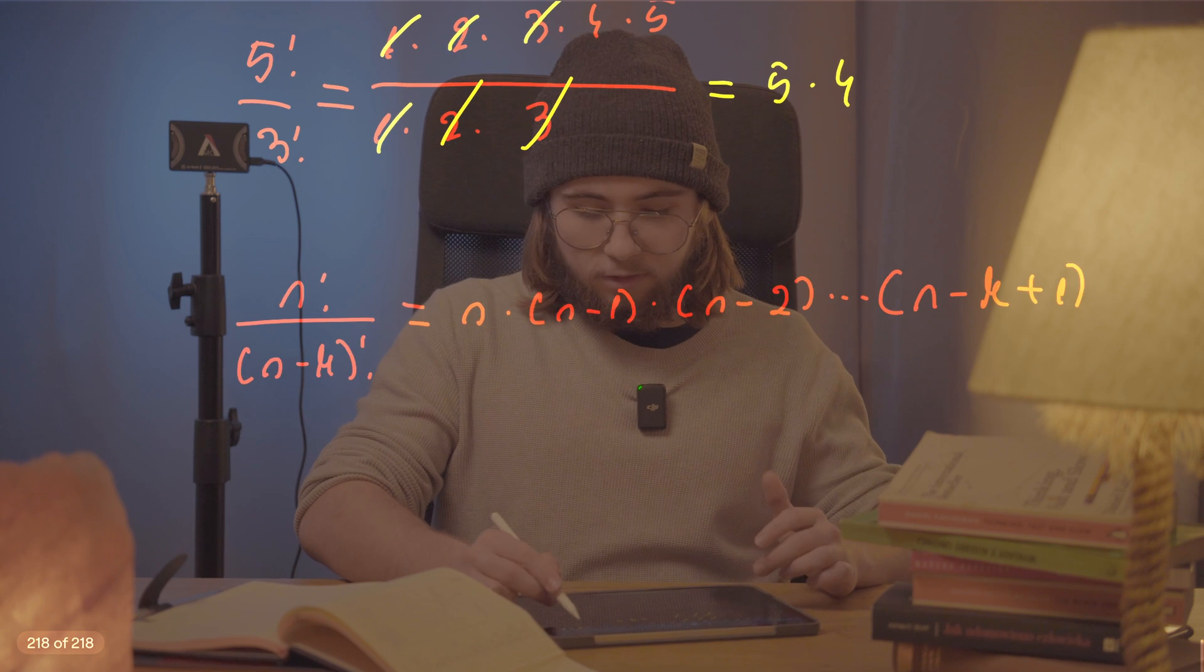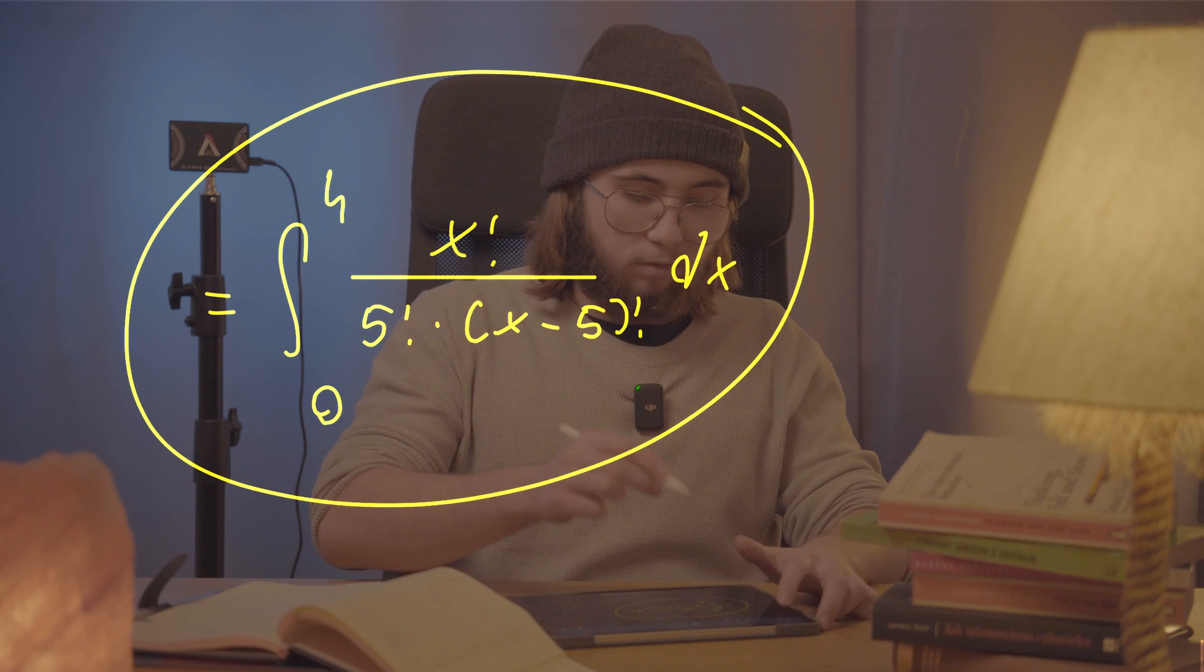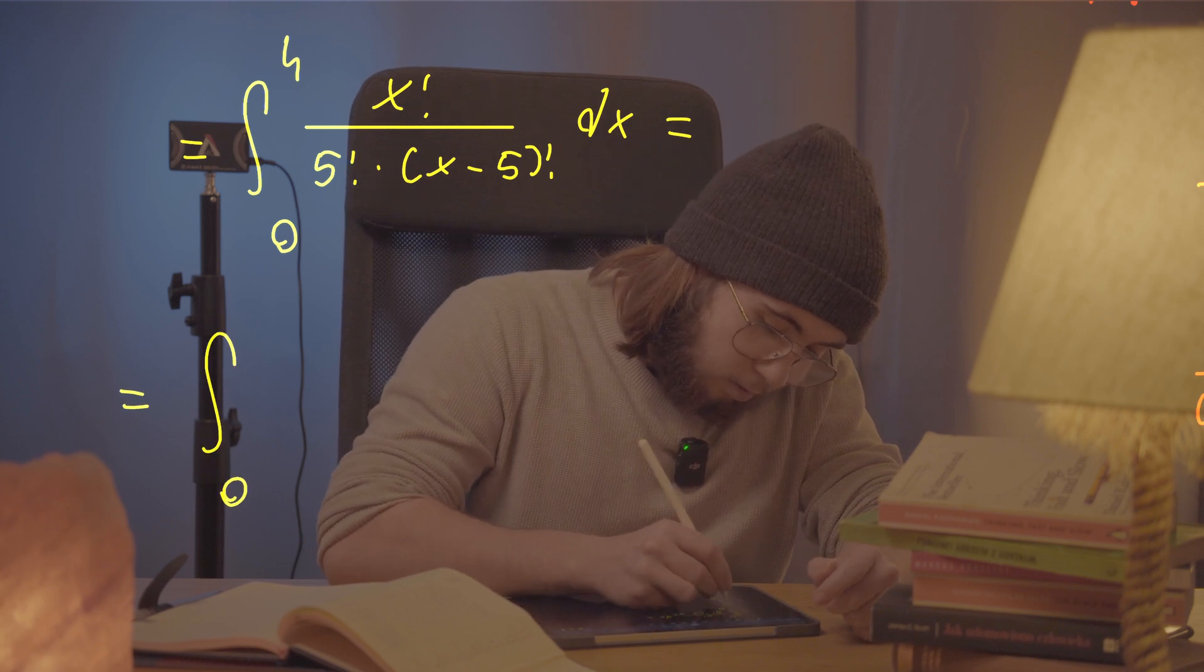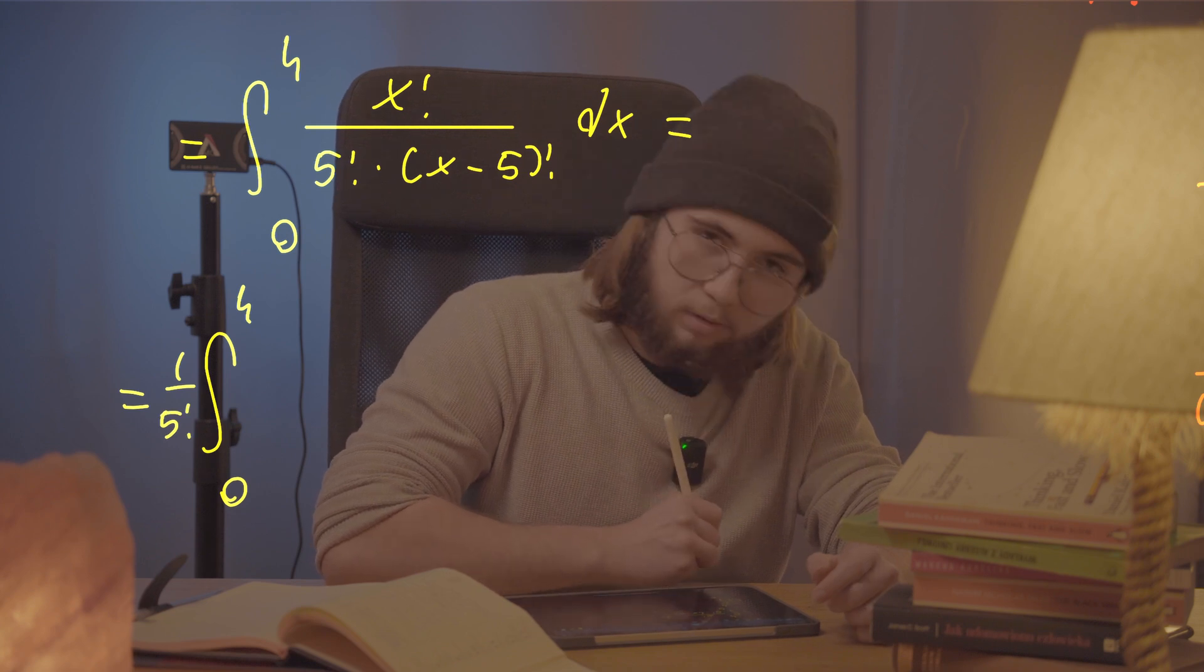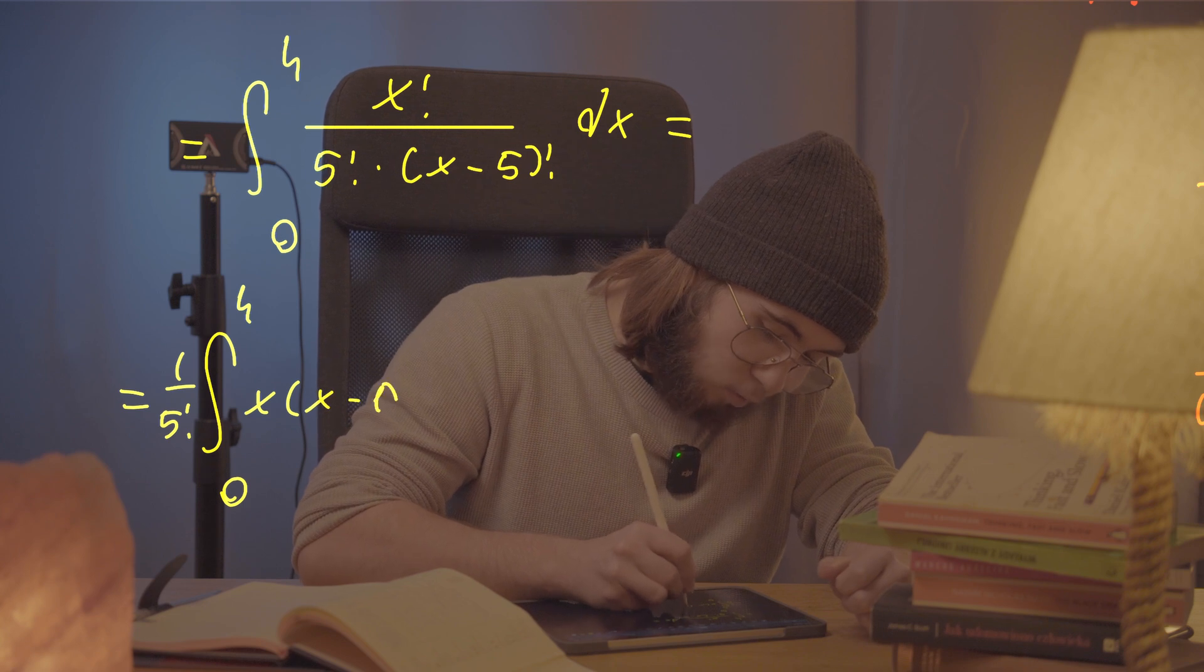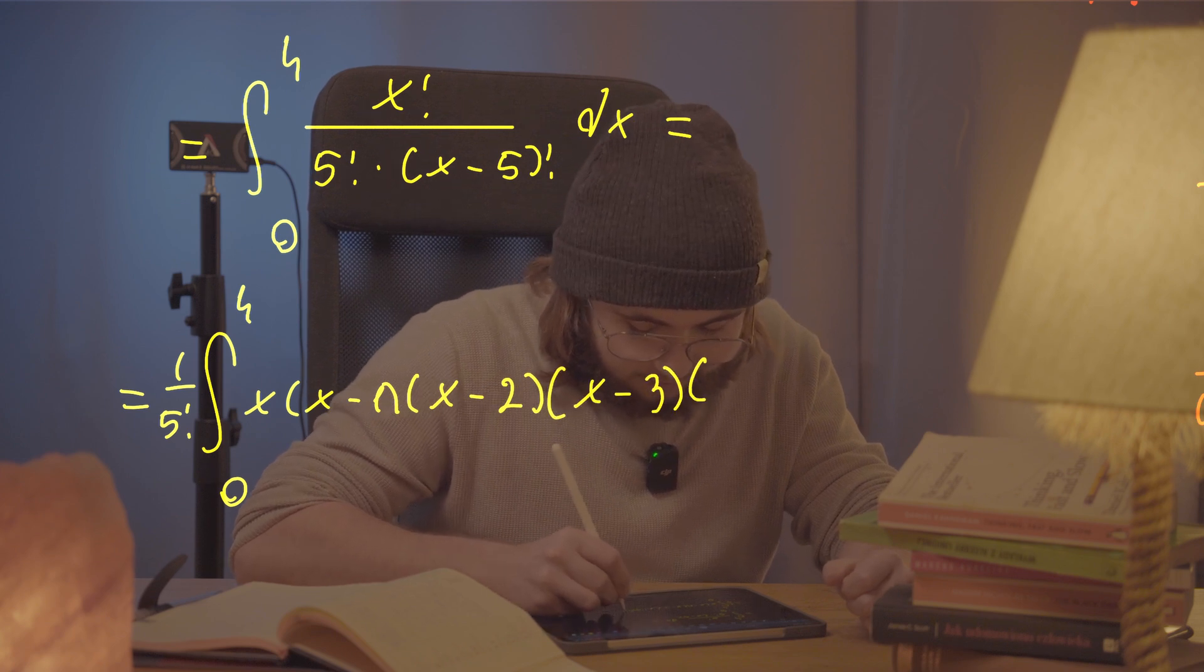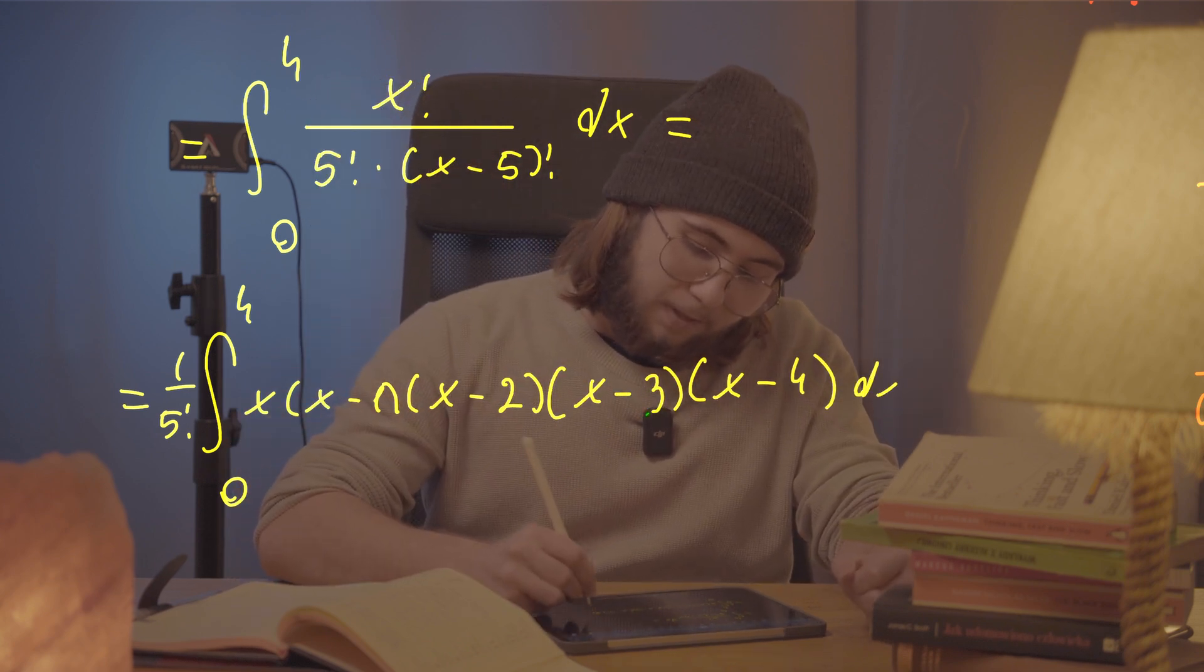And you can actually use this trick right there to rewrite our integral that we've got right here. And how can we do this? We can rewrite it as the integral between zero and four. And I'm going to pull the one over five factorial in front of the integral because it's just a constant, of x times x minus one times x minus two, x minus three, and x minus four. And it's going to be all dx.